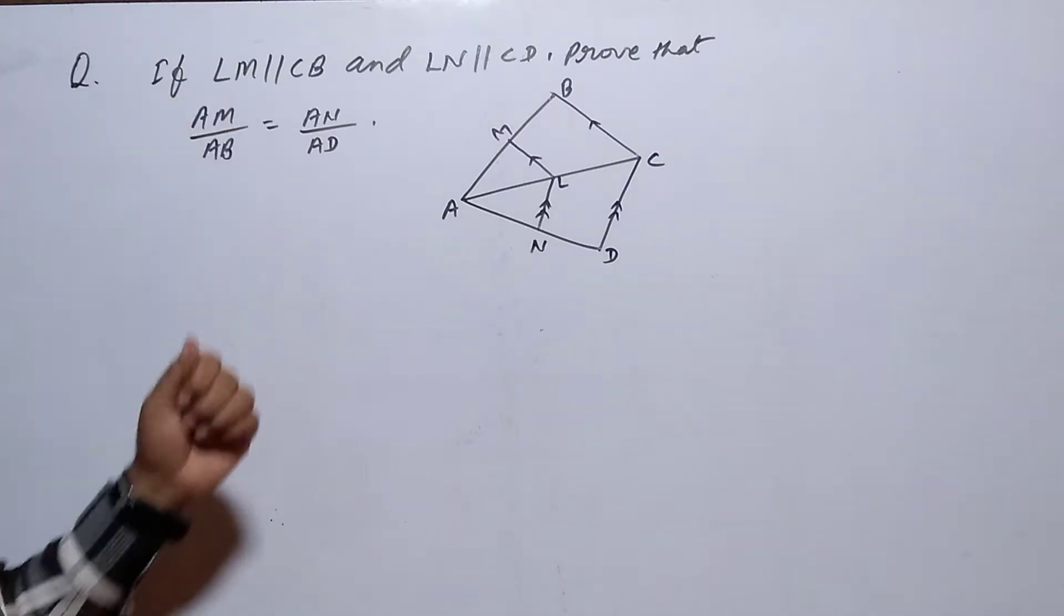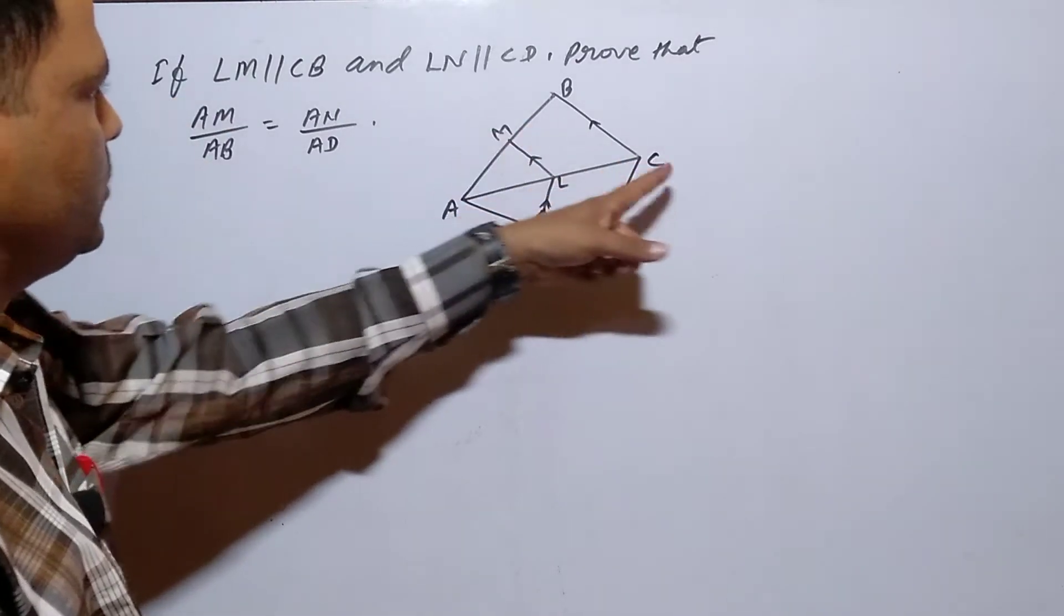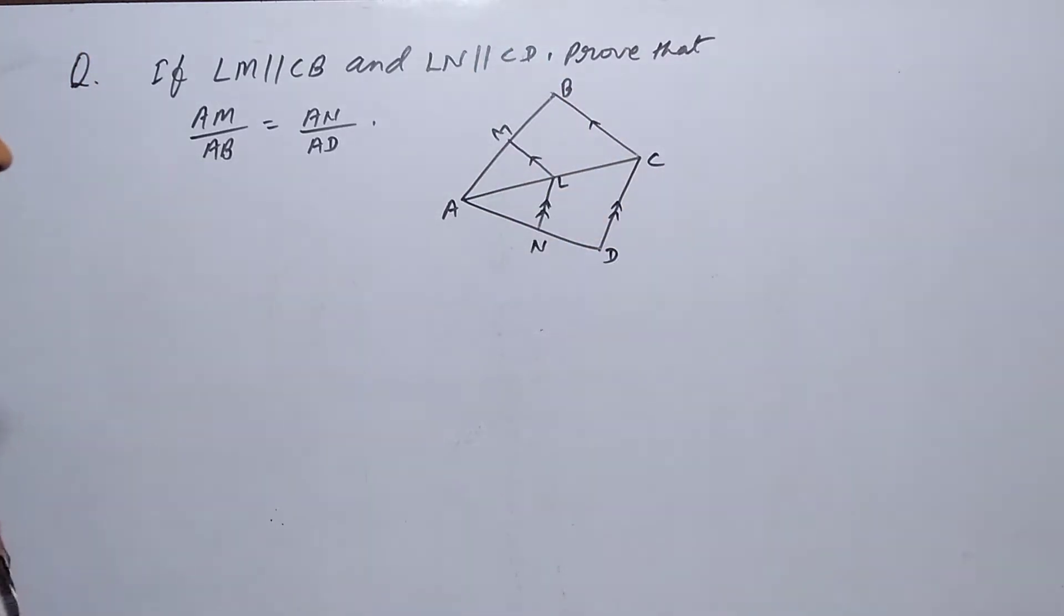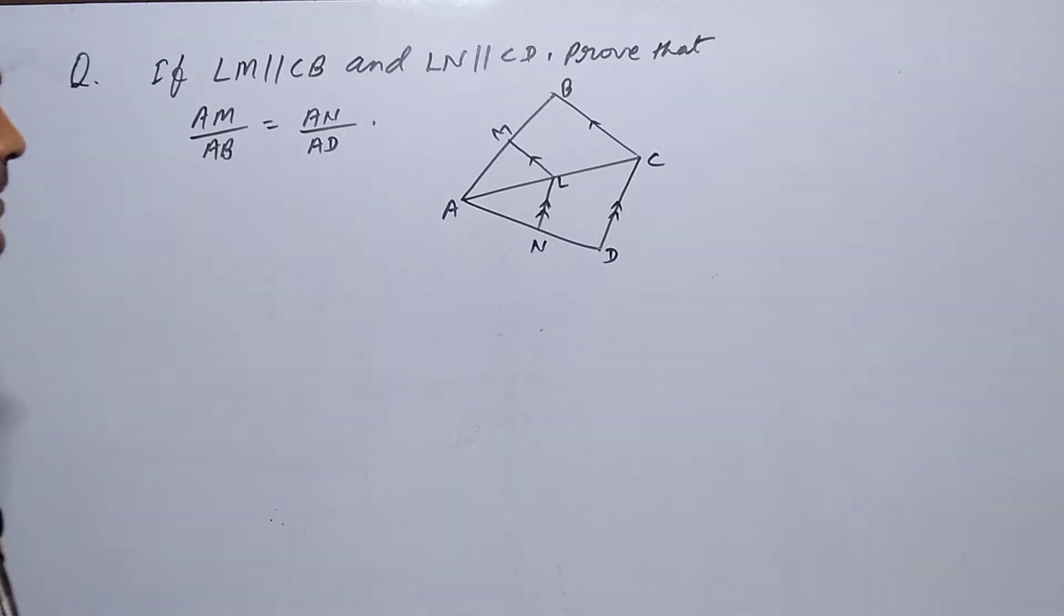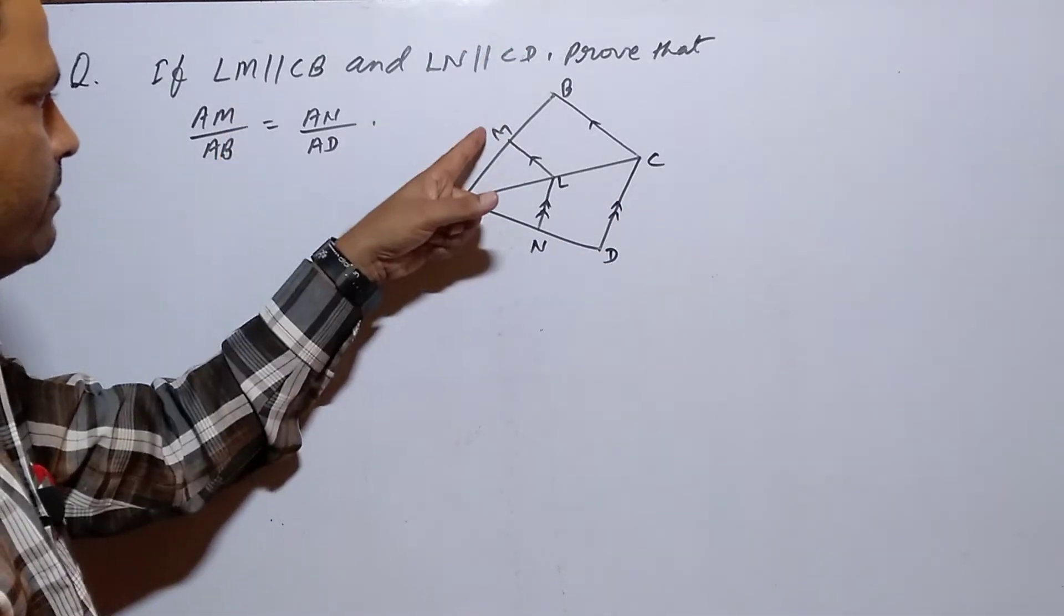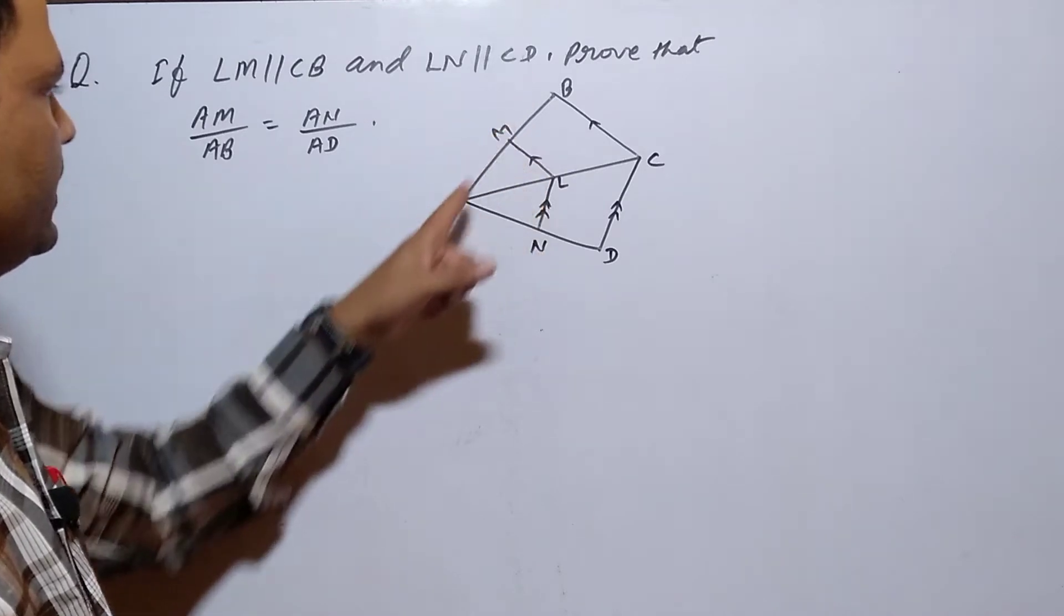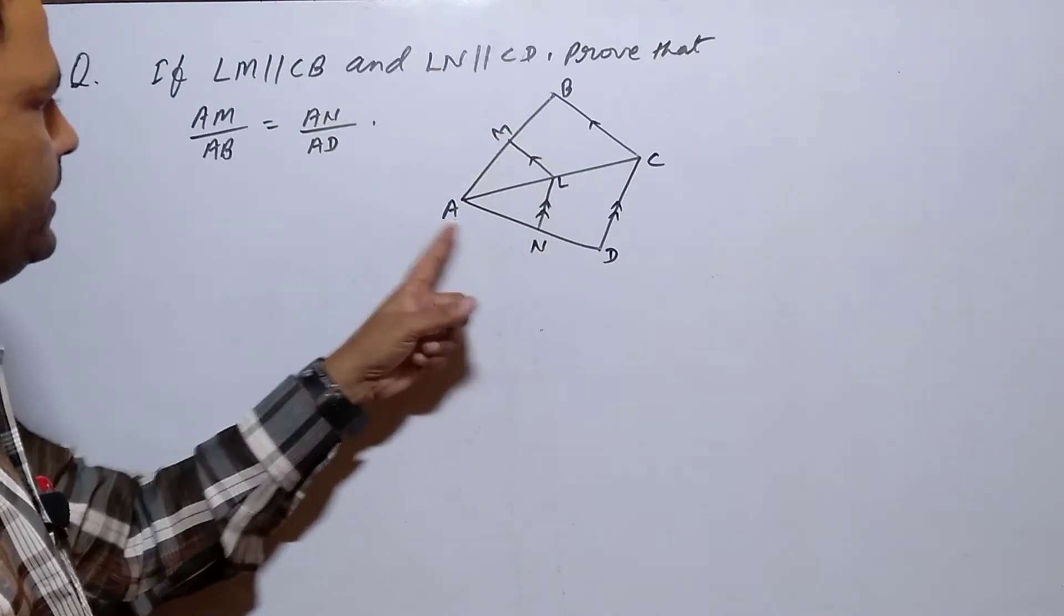If LM is parallel to CB and LN is parallel to CD, then prove that AM by AB is equal to AN by AD.